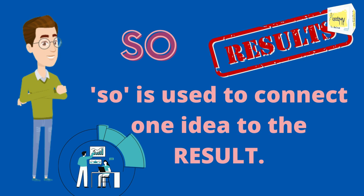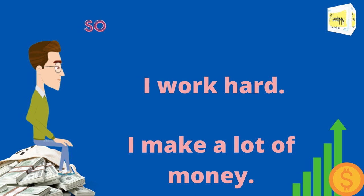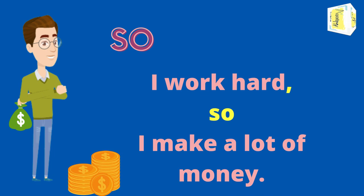Next is conjunction 'so.' 'So' is used to connect one idea to its result. For example: 'I work hard.' 'I make a lot of money.' We can combine these using 'so': 'I work hard, so I make a lot of money.'